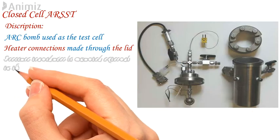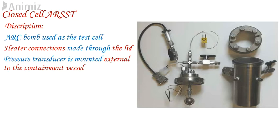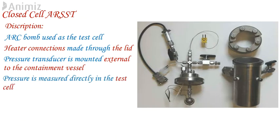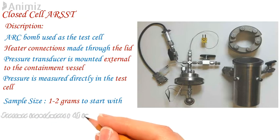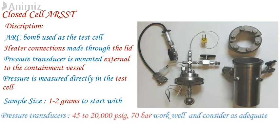The pressure transducer is mounted external to the containment vessel, while the sample thermocouple passes down inside the pressure tube. Good agitation is achieved using a small magnetic stirrer bar. In the closed cell configuration, pressure is measured directly in the test cell. Since the available void space is much less than for an open cell vent sizing test, it is recommended that the test cell fill fraction be substantially less than in vent sizing tests — particularly for gas generation systems. It is suggested to start with no more than one to two grams of sample. ARSST pressure transducers range from 45 to 20,000 PSIG full scale; for most applications, a standard 1000 PSIG (70 bar) transducer works well, though a lower range model may be preferred for better pressure resolution.